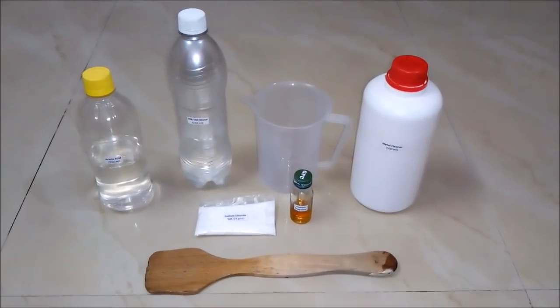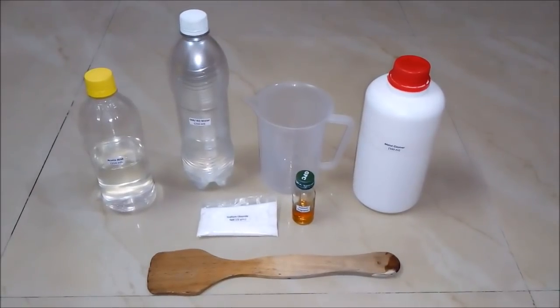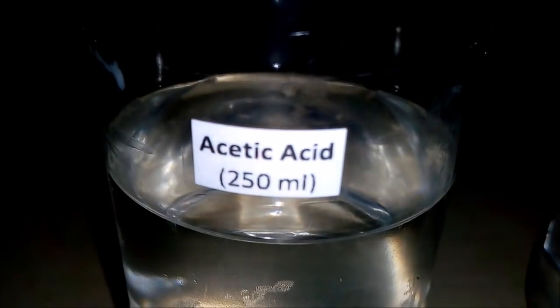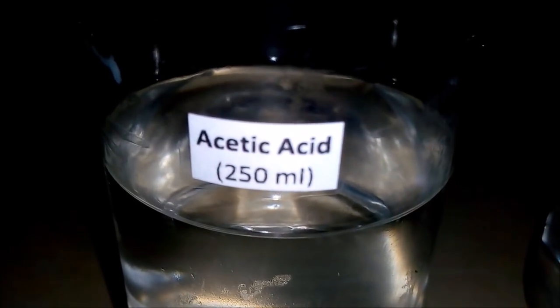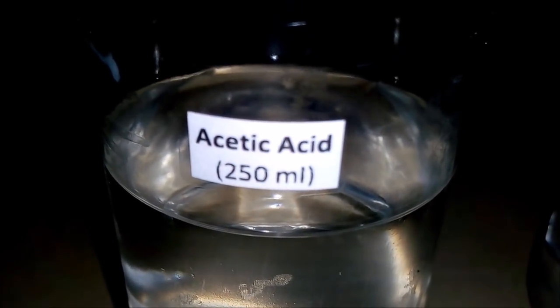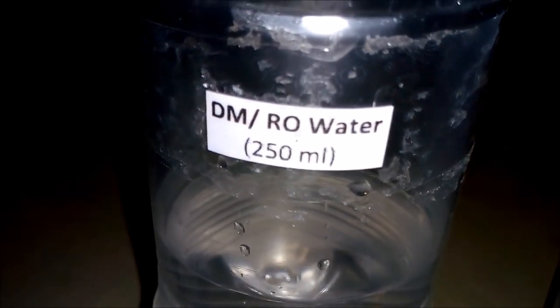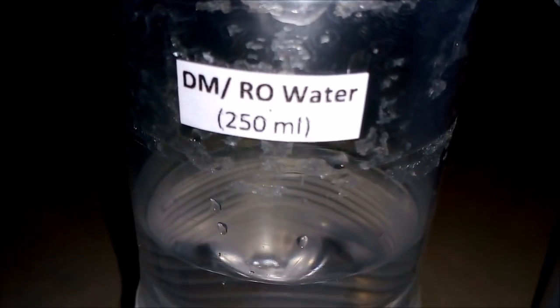For making 500 ml of metal cleaner we will be requiring these things. First is acetic acid around 250 ml. Please use laboratory grade acetic acid. And second is DM or RO water around 250 ml. It's demineralized water.